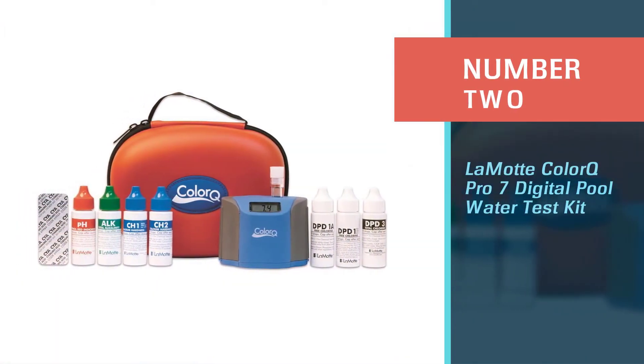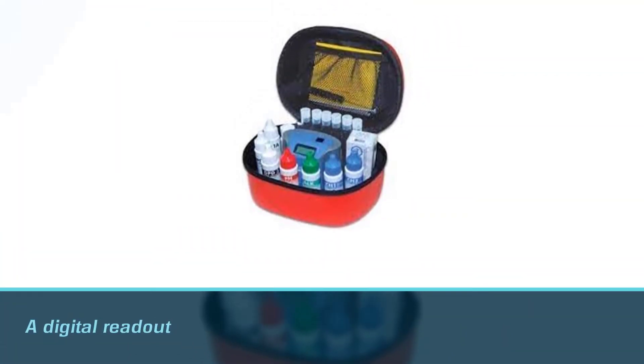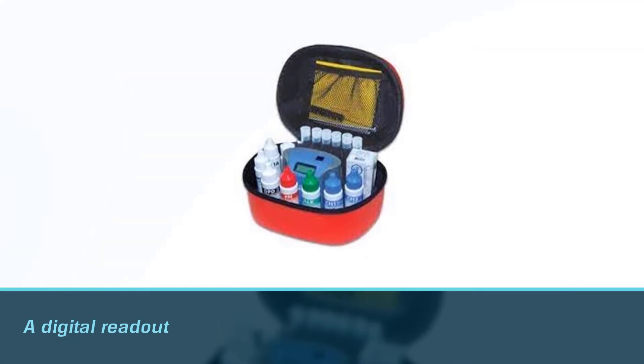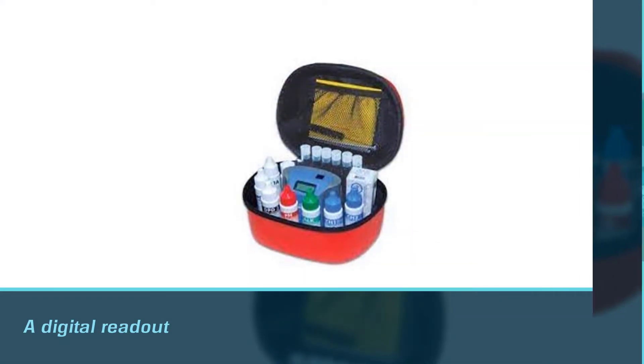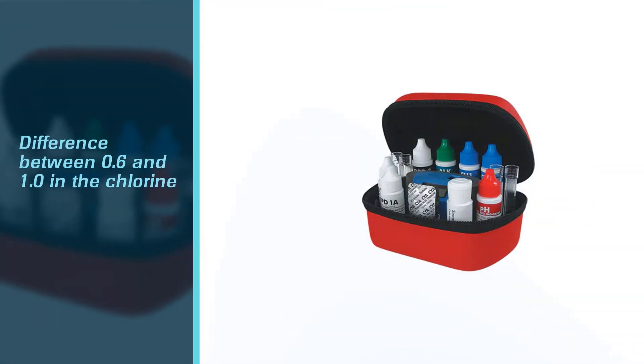Number two: The LaMotte ColorQ Pro 7 Digital Pool Water Test Kit. Instead of having to match the color on a strip to a chart, this test kit gives you a digital readout. The difference between 0.6 and 1.0 in chlorine is almost impossible to discern on that chart, as is the difference between pH 7.2 and 7.6.